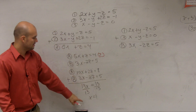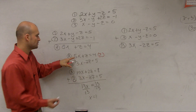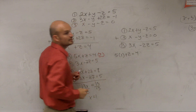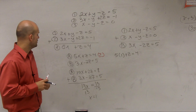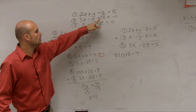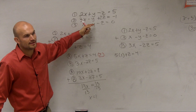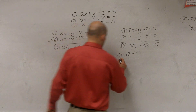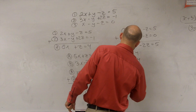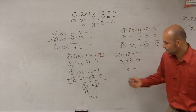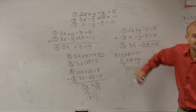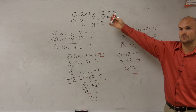Now I know the value of x. To find z, I plug x into one of those equations. I can't plug it into the original three-variable equations yet because I don't know y. So I plug it into equation A: 5 times 1 plus z equals 4, giving 5 plus z equals 4. Subtract 5: z equals negative 1.